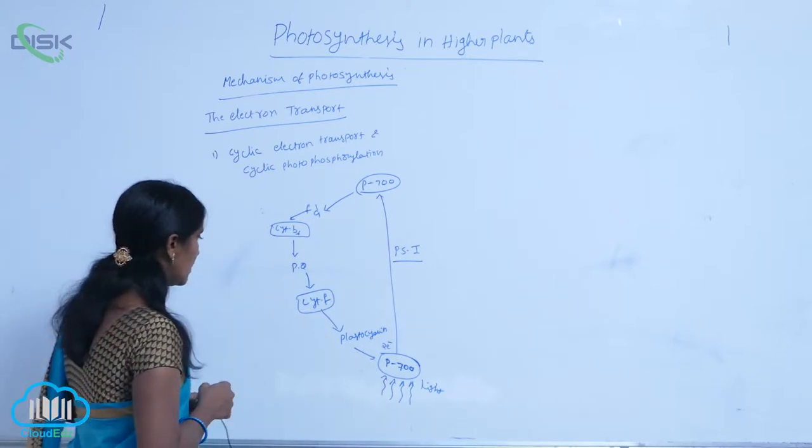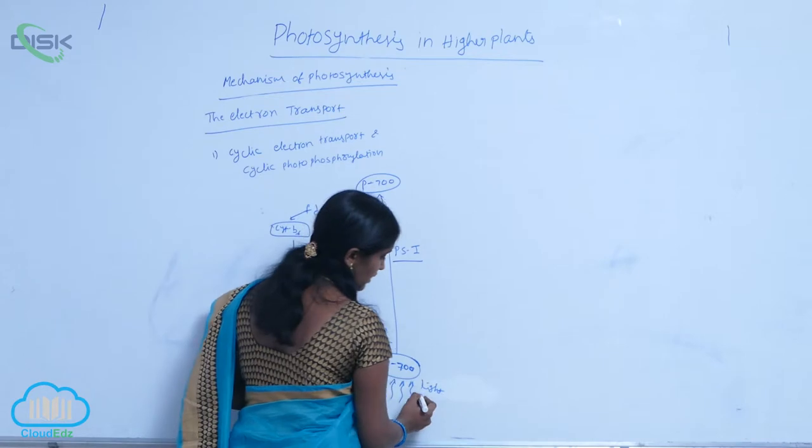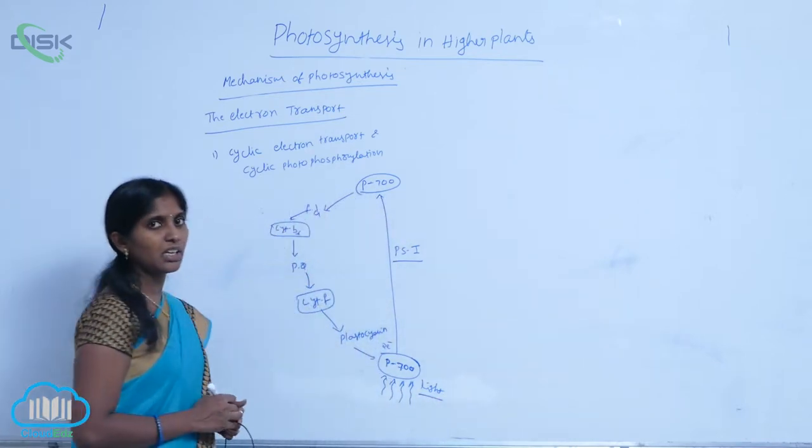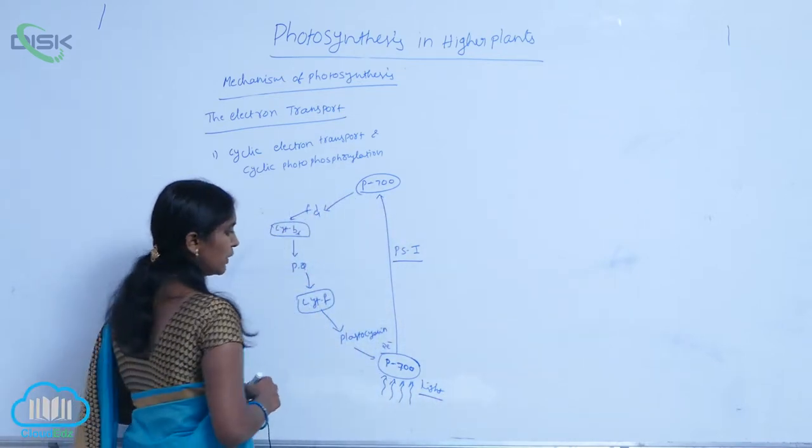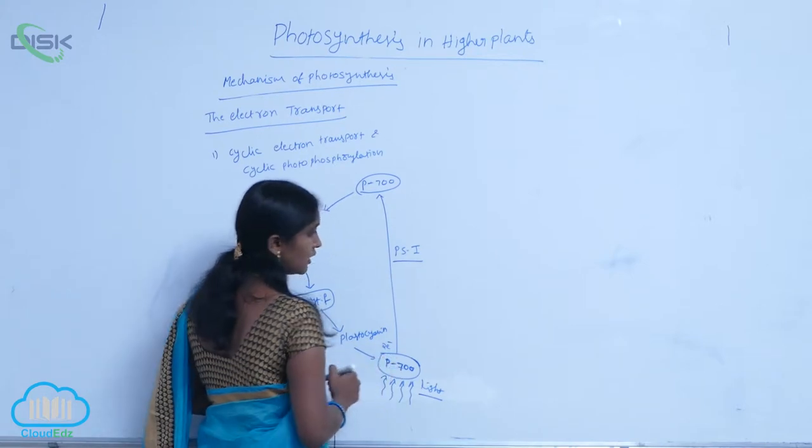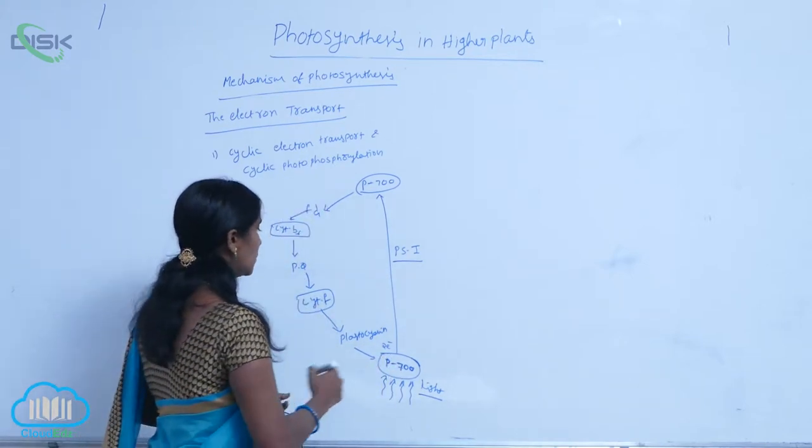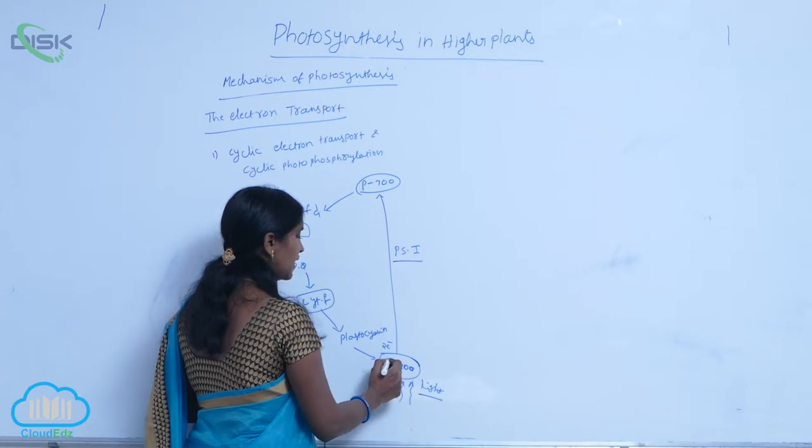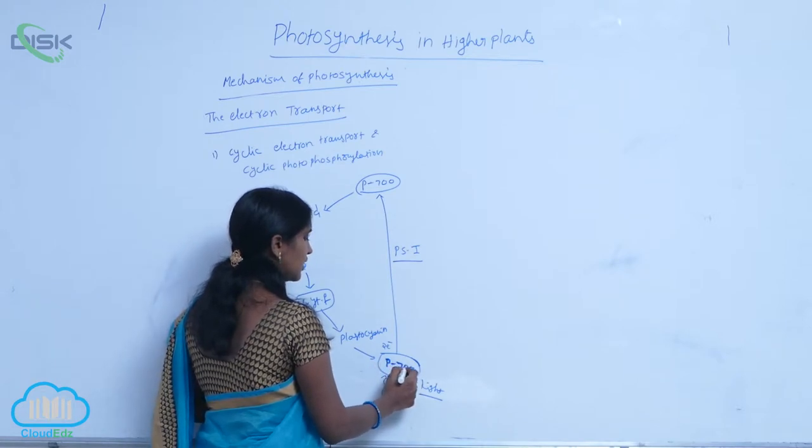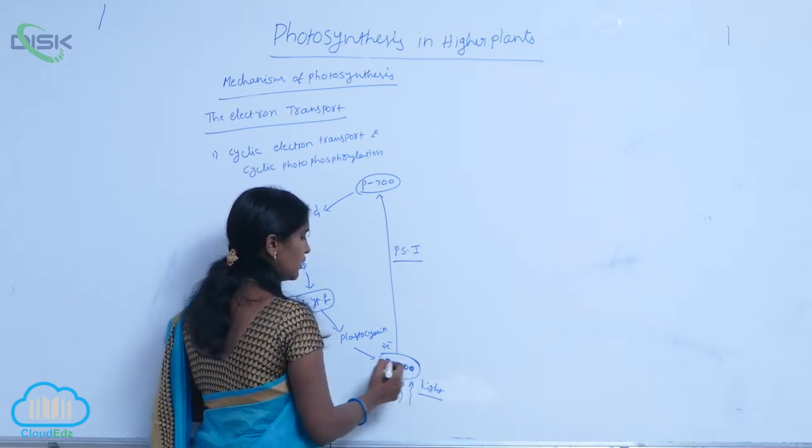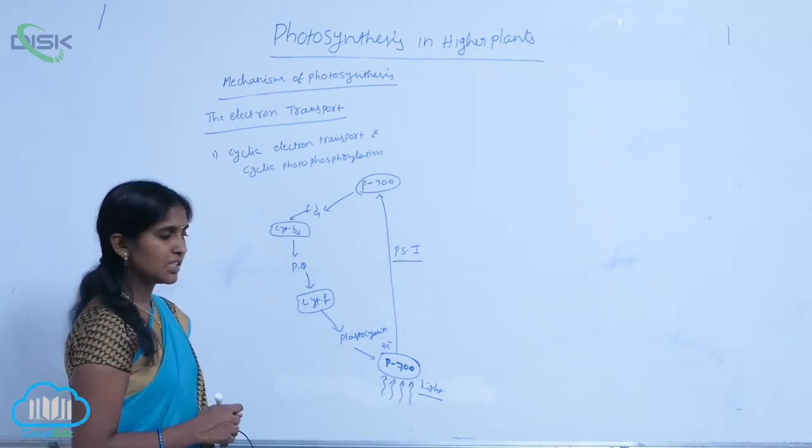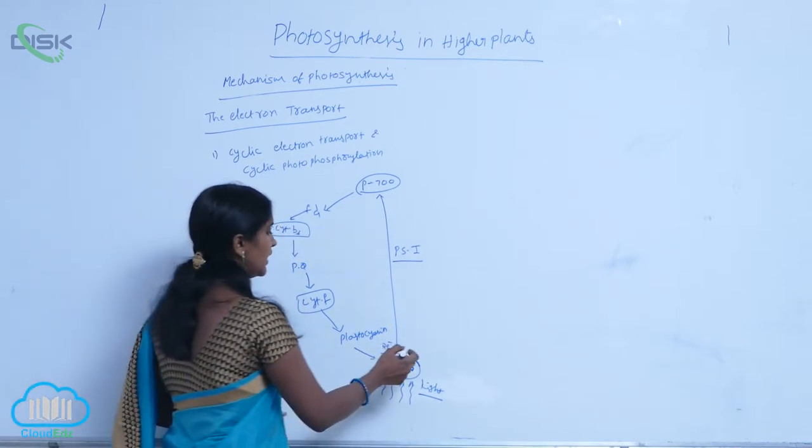How does this work? First, the solar or radiant energy is absorbed by the antenna pigments, which then pass the light to the P700 reaction center. When P700 receives this radiant energy, it becomes excited.